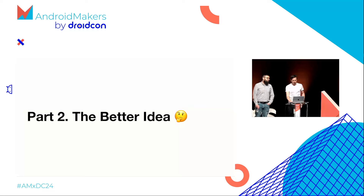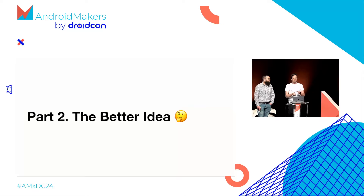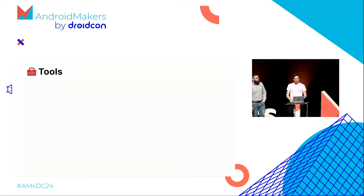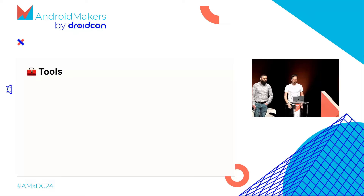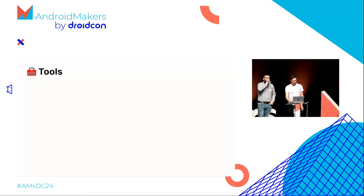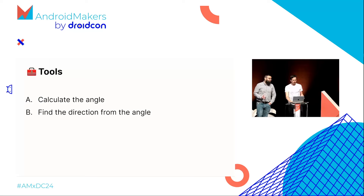So how to improve that? No matter where the user's thumb is, if it's in the press state, how can we keep updating the nav key with the press and release state? Now it's five minutes of mathematics — don't worry, it's middle school mathematics — but we're going to speak about trigonometry. We need three functions: how to calculate an angle, how to find the direction from that angle, and how to properly apply an offset for the dot.